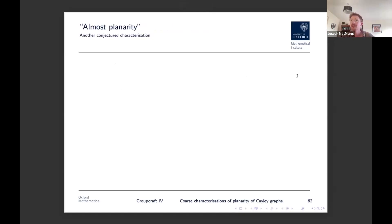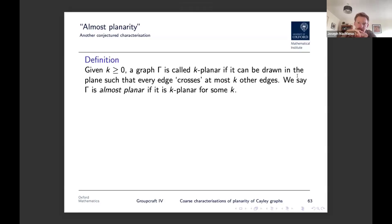So what do I think? Well, let me introduce one more definition. So given some constant K, at least zero, a graph gamma is called K-planar if it can be drawn in the plane such that every edge crosses at most K edges. So somehow it's not quite a perfect drawing, but it's kind of like boundedly bad. And then we say that our graph gamma is almost planar if it is K-planar for some K. So again, this doesn't really make sense for finite graphs, but for infinite graphs, this is interesting.